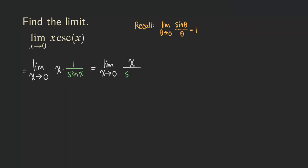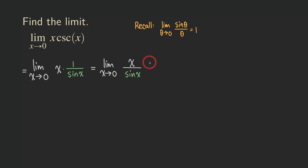So we have x over sine x. Now if you compare what you have right now with this limit, you can see that that's actually just the reciprocal. So how do we rewrite this function so that it's in the form of sine of theta over theta? The question is how do we bring this x to the bottom? You can multiply top and bottom by 1 over x, or we can simply just move this x to the bottom by taking the reciprocal.